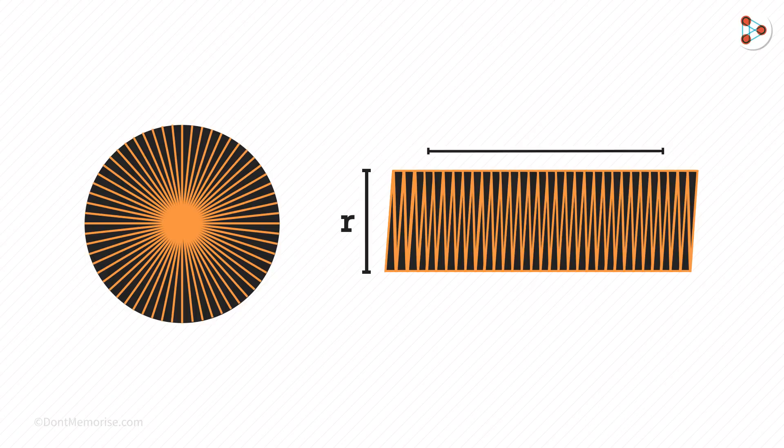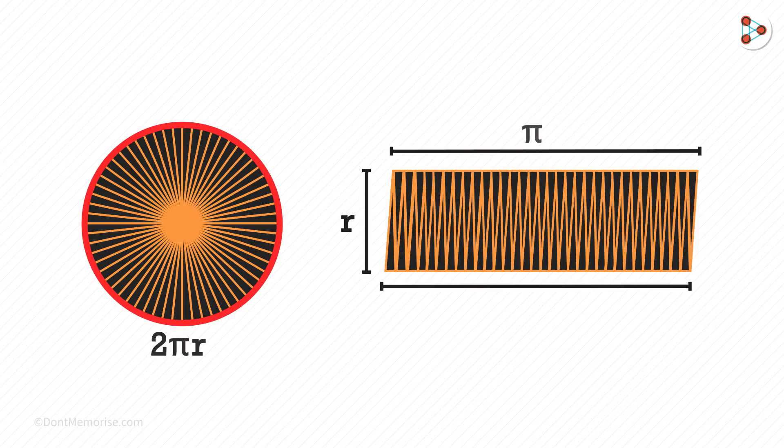And the addition of the upper and lower lengths will be 2 pi r because they total nothing but the entire boundary of the circumference. So the length above will be pi r and the length below will also be pi r.